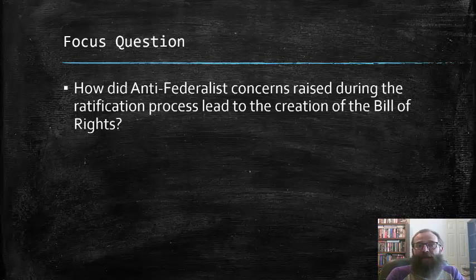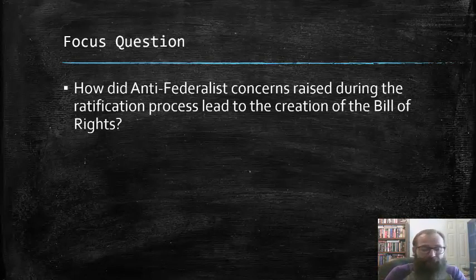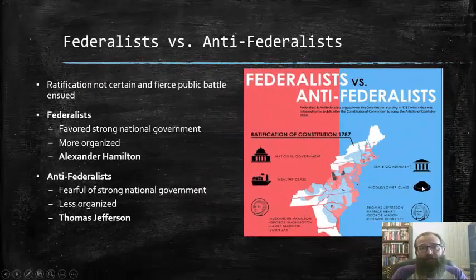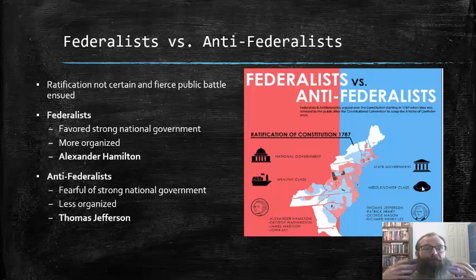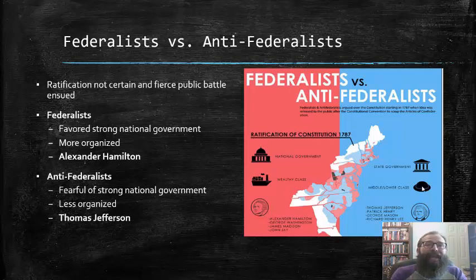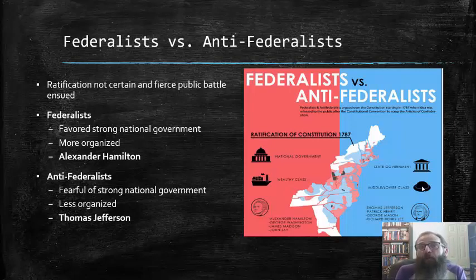The focus question for this section is: how did Anti-Federalist concerns raised during the ratification process lead to the creation of the Bill of Rights? The ratification of the Constitution was by no means certain, and right off the bat, a fierce public battle over ratification ensued, where essentially two opposing camps were set up — the Federalists versus the Anti-Federalists — and these two camps would form the basis for what would evolve into the party system in American politics.